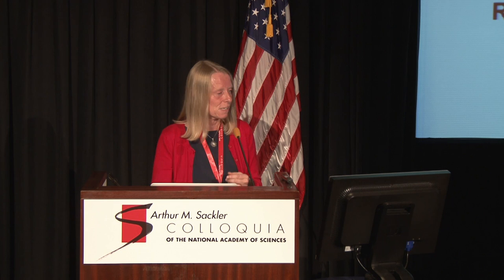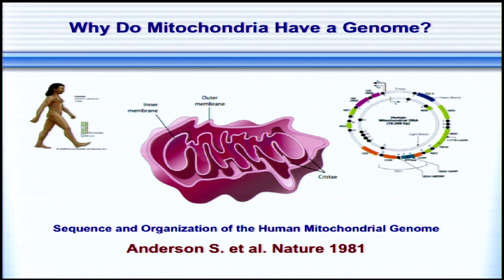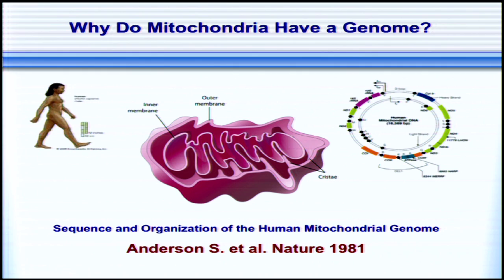Another question raised ever since the mitochondrial genome was discovered is: why do mitochondria have a genome? The human mitochondrial genome was published in 1981 — the first author was Anderson S., and unfortunately that was not me. As you know, this genome is extremely small, not only with few genes but also very compact — even termination codons have been eliminated. There has been an extremely strong pressure to minimize this size. I hadn't thought about this question for a long time, until recently a postdoc, Patrick Björkholm, joined my group. I asked him to work on mitochondrial membrane proteins, and after reading up on mitochondria, he came back with a hypothesis for why mitochondria have a genome.